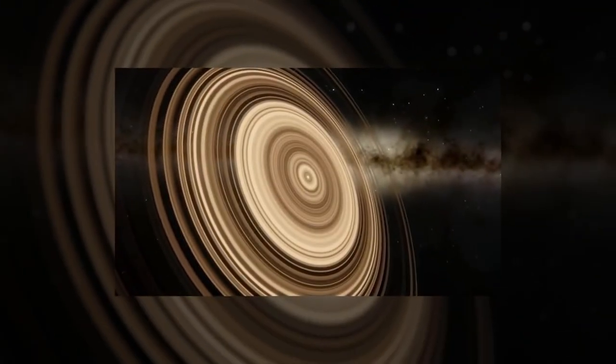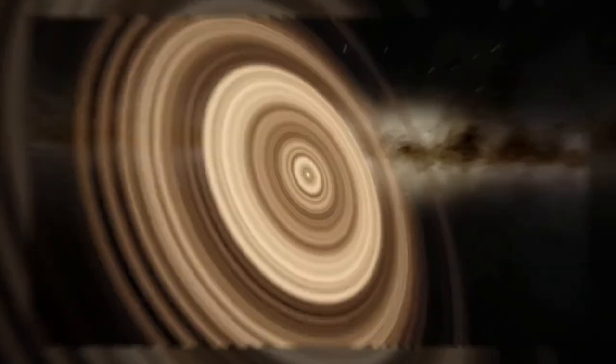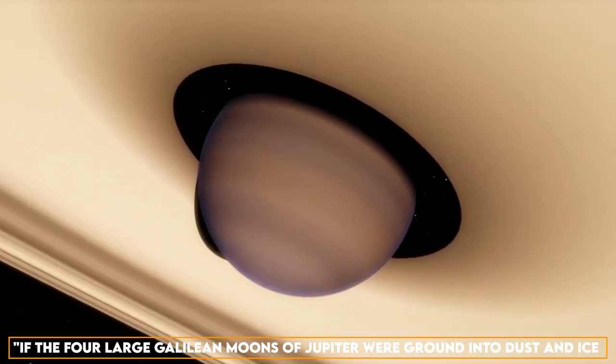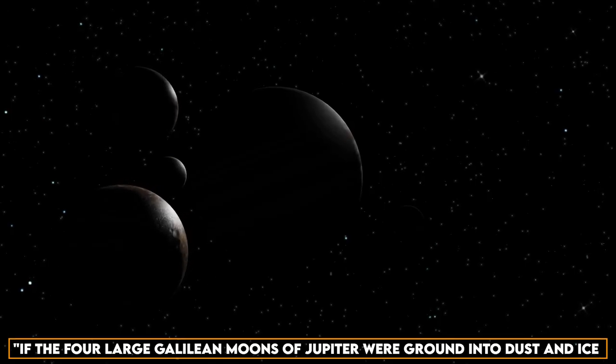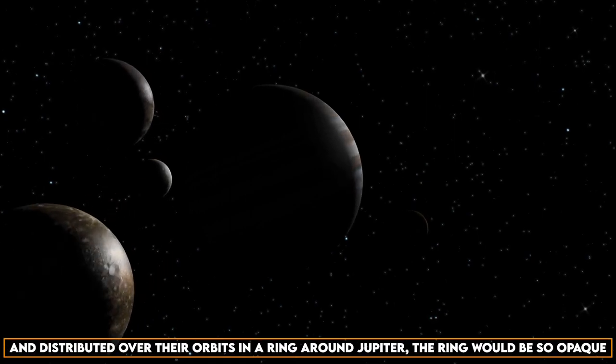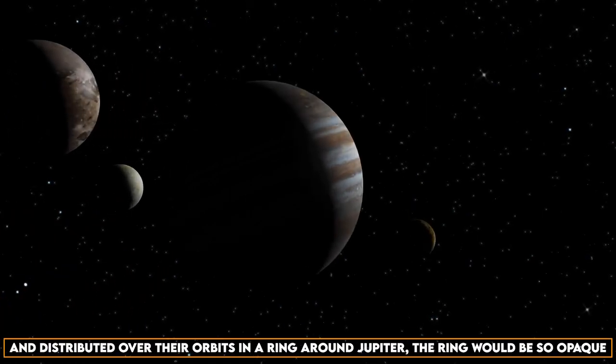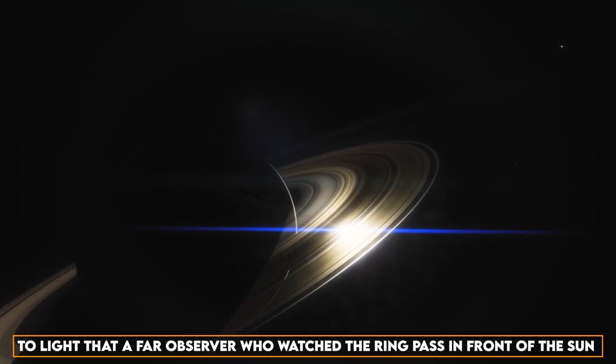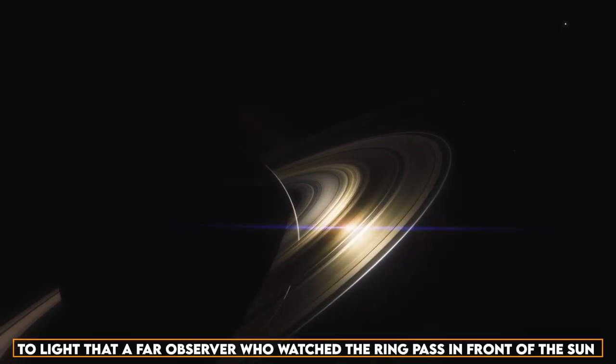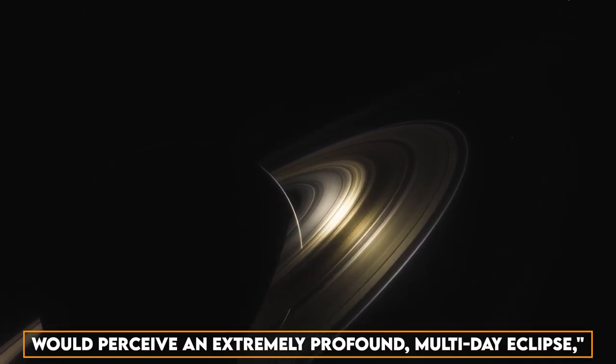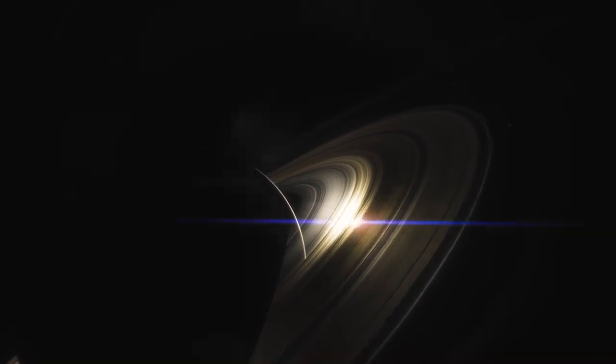The volume of the material in these disks and rings is explained by Mamajek. If the four large Galilean moons of Jupiter were ground into dust and ice and distributed over their orbits in a ring around Jupiter, the ring would be so opaque to light that a far observer who watched the ring pass in front of the sun would perceive an extremely profound, multi-day eclipse, claims Mamajek.